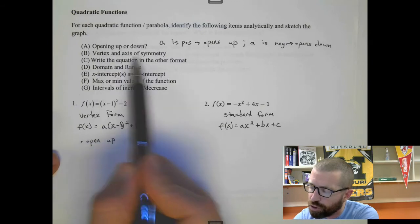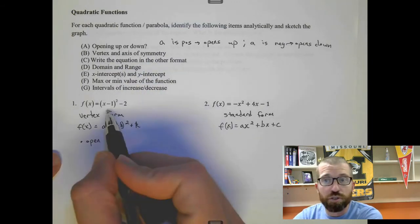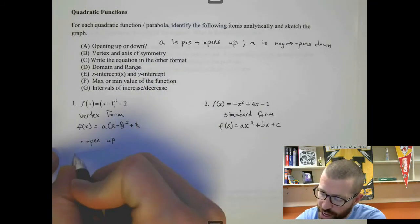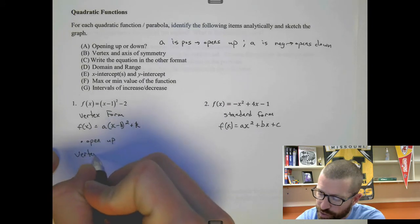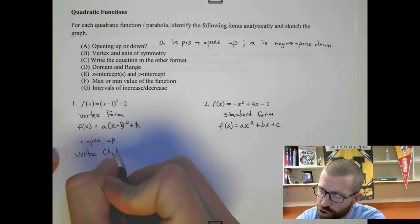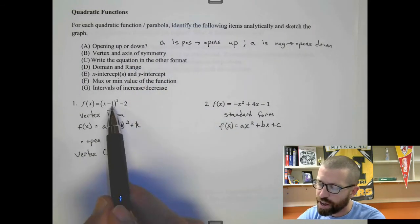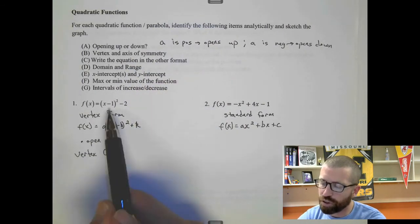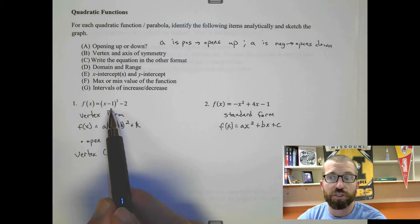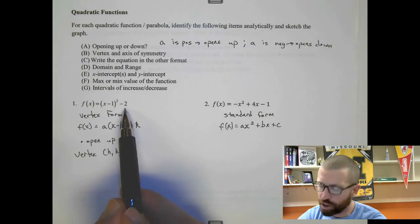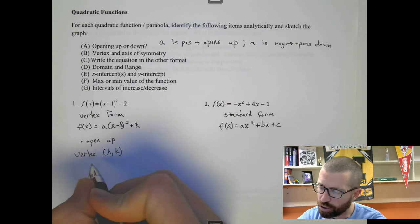Which means it's going to have a minimum value for the bottom of the vertex. The vertex in vertex form is just h, k. And so you get to just look at it and see. The vertex here, it's h, and it's negative h.